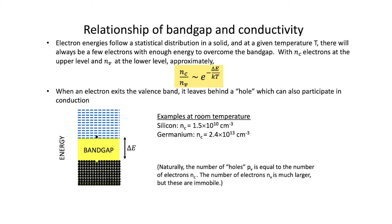It turns out that silicon has approximately 1.5 × 10¹⁰ electrons in the conduction band per cubic centimeter of material. That might sound like a big number, but it's actually not very many at all, because there are something like 10²³ silicon atoms per cubic centimeter. So only about one out of every 10¹³ electrons in the crystal are actually conduction electrons — this is why silicon is a very good insulator. Heating up a piece of silicon will increase that number, but silicon will actually melt before enough electrons make it up to the conduction band for it to conduct electricity.